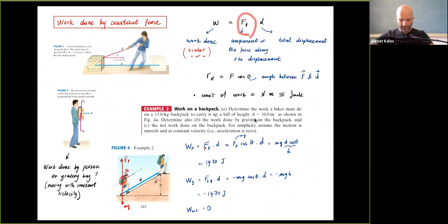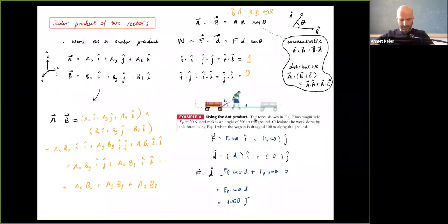We said that the unit of work was newton-meter, called joules. To make this more systematic, we introduced a mathematical tool called the scalar product, and we showed that the work we defined was equivalent to a scalar product between the force vector and the displacement vector.